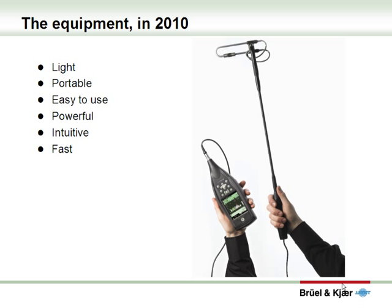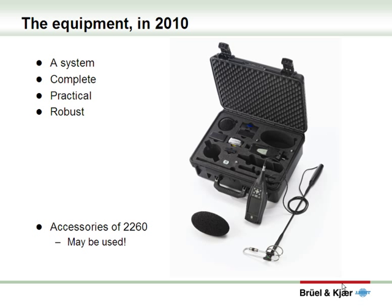This is what the equipment looks like today. The 2270 can be fitted with the sound intensity application. It's lightweight, portable, easy to use, has powerful processing features, an intuitive user interface, and it works fast. Here's a picture of the complete system including all the accessories needed for a practical, real-world sound intensity measurement. And the good news for users of the older 2260 platform is that all your accessories fit directly onto your 2270.